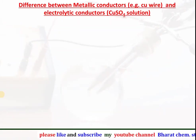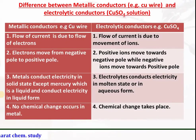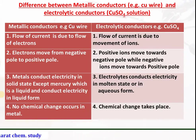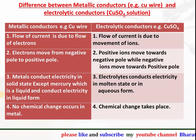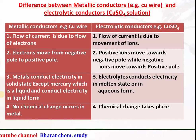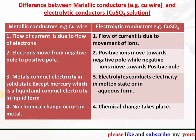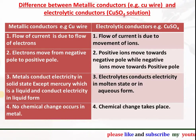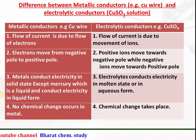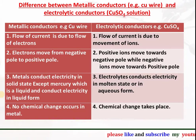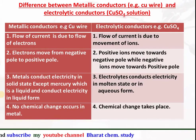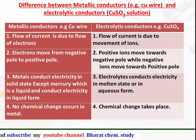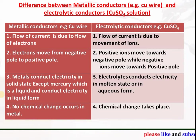Difference between metallic conductors and electrolytic conductors: In metallic conductors, the flow of current is due to flow of electrons, whereas in electrolytes the flow of current is due to movement of ions. Electrons move from negative pole to positive pole in metals, whereas in electrolytes positive ions move towards the negative pole and negative ions move towards the positive pole. Metals conduct electricity in solid state (except mercury, which is liquid), whereas electrolytes conduct electricity in molten state or aqueous solution. In metallic conductors no chemical change occurs, whereas in electrolytes chemical change takes place.